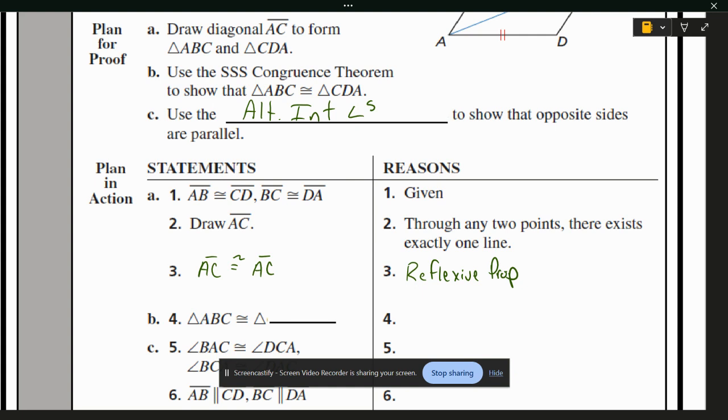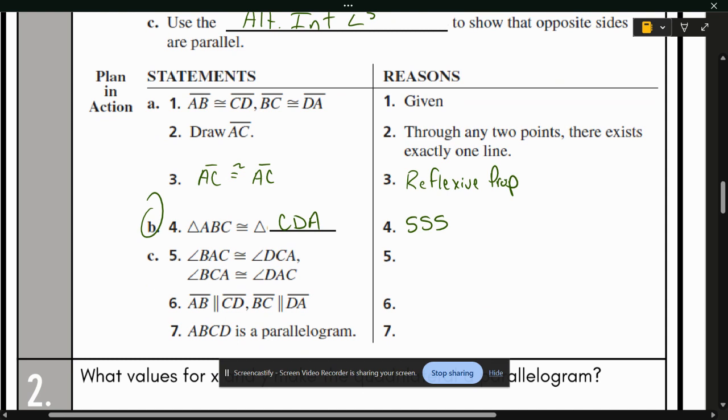So triangle ABC is congruent to triangle CDA. We're looking at this right here, this part, and we're using it down here in letter B. And that's because of side, side, side. Now, because we've proven the triangle congruent, anything inside of that is going to be the CPCTC part. The congruent parts of congruent triangles are congruent. So CPCTC for the angles. Because those angles on the inside are congruent, they're alternate interior angles. So those lines are parallel because of the alternate interior angles converse.